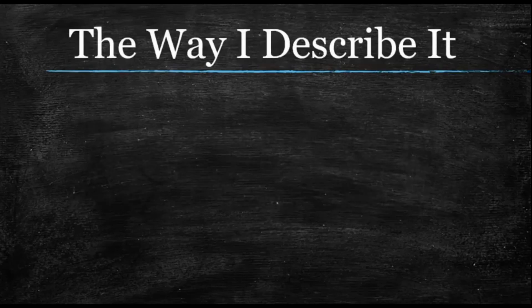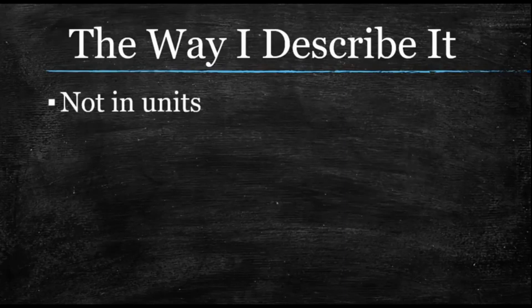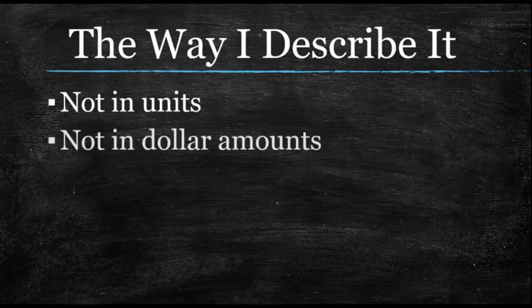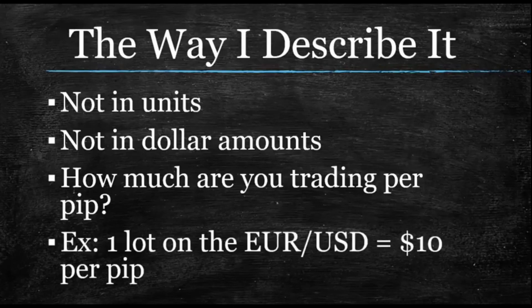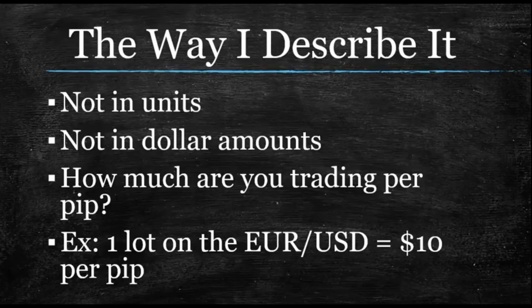Here's the way I describe trade entries in terms of how much money to put on a trade. I don't speak in units — I don't say put 10,000 units on the euro dollar. I don't say it in dollar amounts either. I say: how much are you trading per pip? What is your pip value? To me, that's the best way to speak in money management terms, and that's how you're going to hear me talk from this point forward. I don't speak in lots either, because one lot on the euro dollar is $10 a pip, but one lot on the euro pound does not equal $10 a pip. So let's go to the charts and I'll show you the ATR.